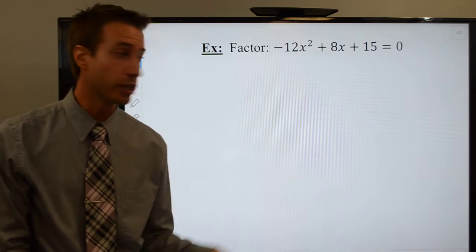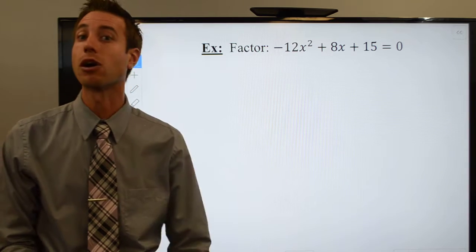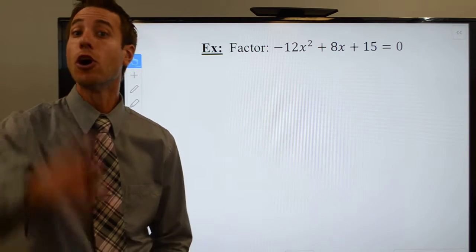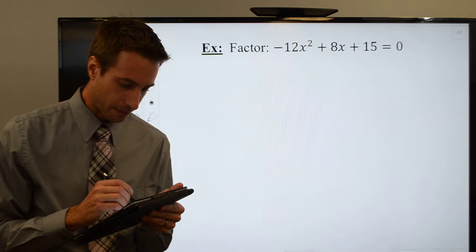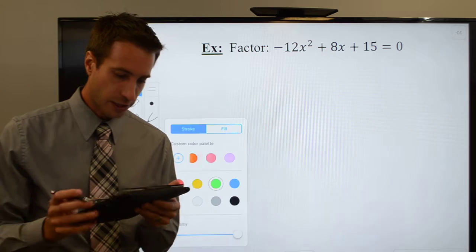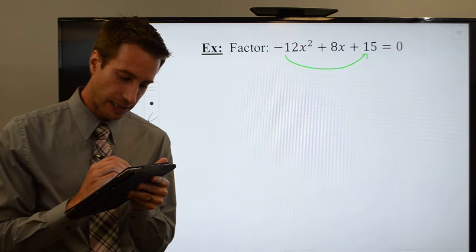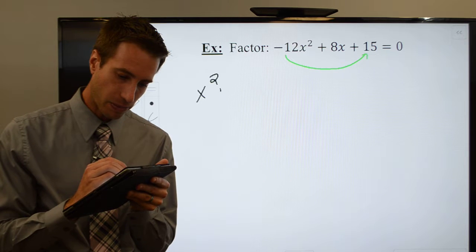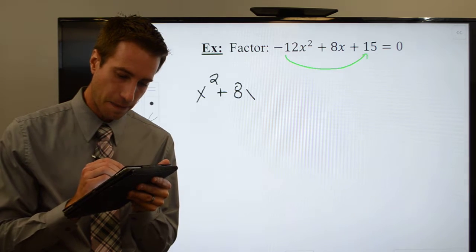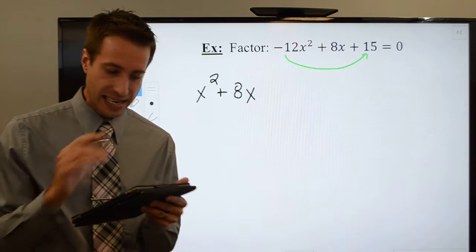Now, I could go ahead and set up a table and do that gigantic long method, which takes forever. Or, slide and divide. Let's go ahead and slide that negative 12 right on over. That's going to leave me with x squared plus 8x.